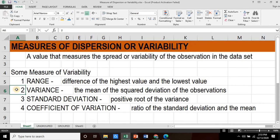This is the mean of the squared deviation of the observations. The third is the standard deviation. It's the positive root of the variance. And the fourth is the coefficient of variation. This is the ratio of the standard deviation and the mean.